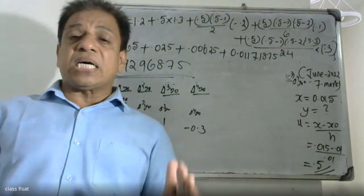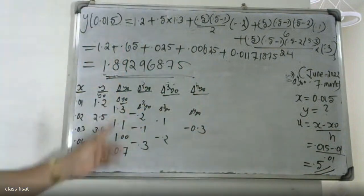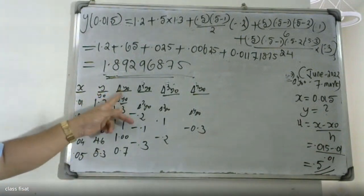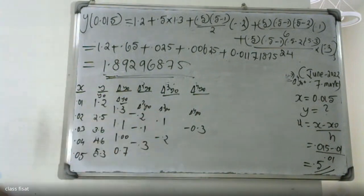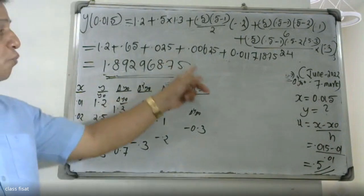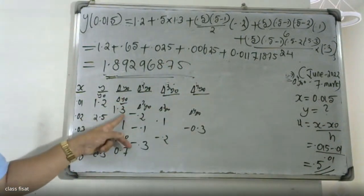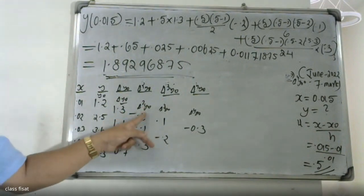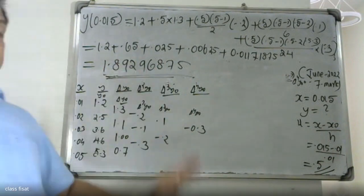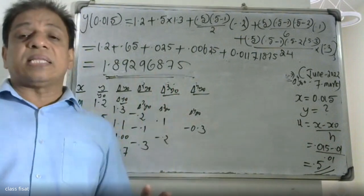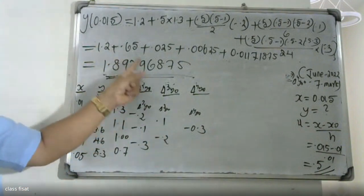The differences used: Δy0 = 1.3, Δ²y0 = −0.2. We substitute these values into the formula and simplify to get the final answer: y(0.015) = 1.892968.